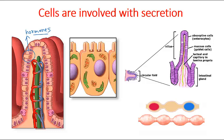Nutrients absorbed by the epithelial cells move either to capillaries or to lymphatics and then travel to the rest of the body. These mucosal epithelial cells are mitotically active, so they can divide by mitosis. This structure is not permanent — it changes approximately every three to six days, producing new cells to replace the old ones, because those cells perform continuous work of absorbing and digesting.